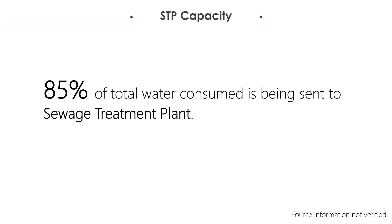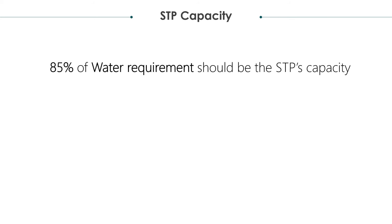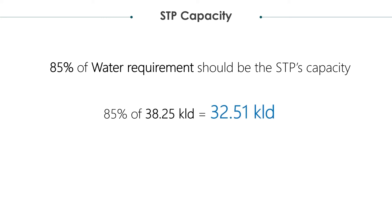Therefore, 85% of total water consumed is being sent to the sewage treatment plant. Hence, 85% of the water requirement will be the STP capacity. 85% of 38.25 kiloliters per day is equal to 32.51 kiloliters per day.